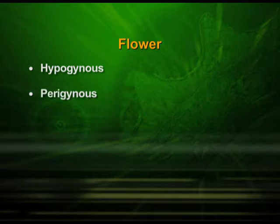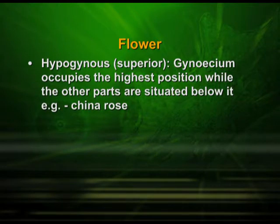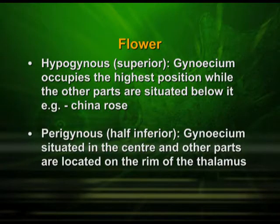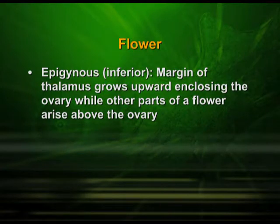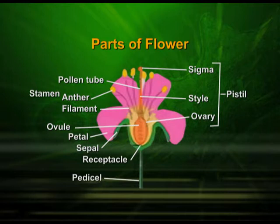Depending upon the position of the ovary, the flower may be hypogynous, perigynous, or epigynous. In a hypogynous flower, the gynoecium occupies the highest position while the other parts are situated below it. In a perigynous flower, which is also called half inferior, the gynoecium is situated in the center and the other parts are located at the rim of the thalamus. In an epigynous flower, which is referred to as inferior flower, the margin of the thalamus grows upward enclosing the ovary, while the other parts of the flower arise above the ovary.